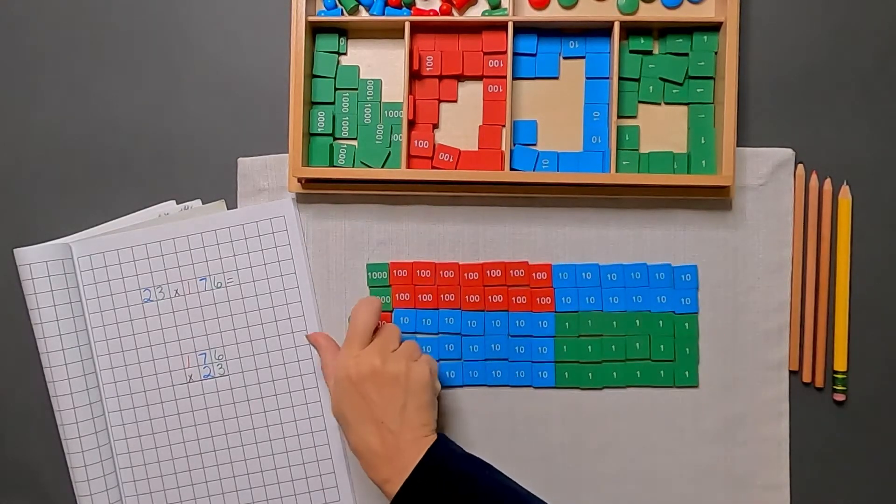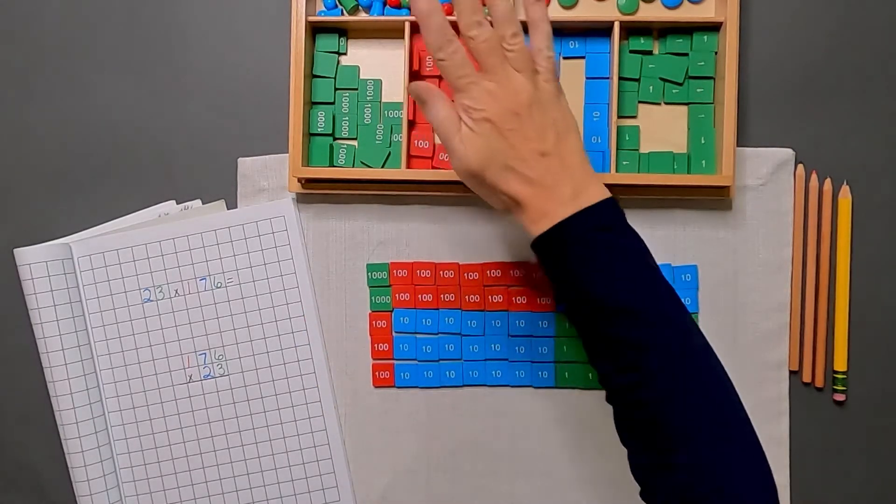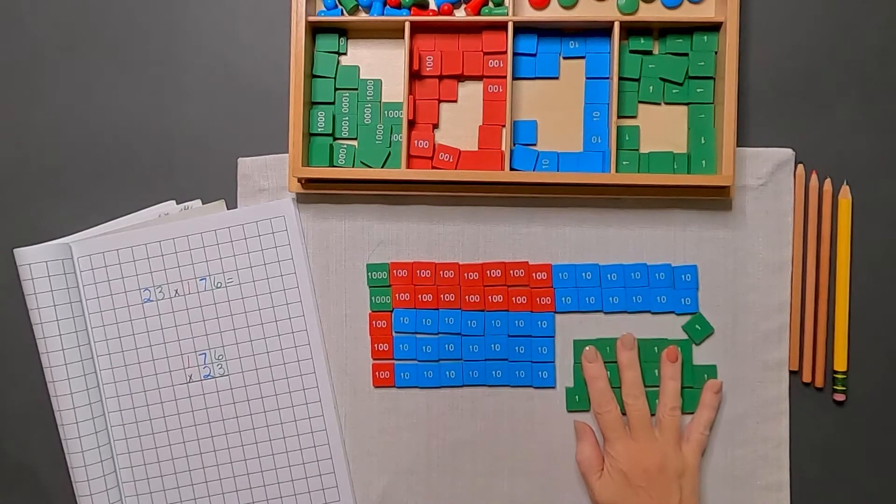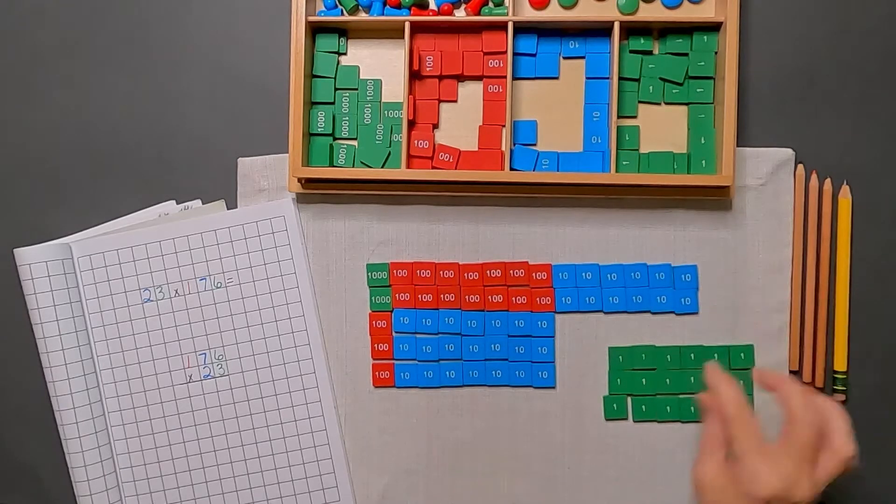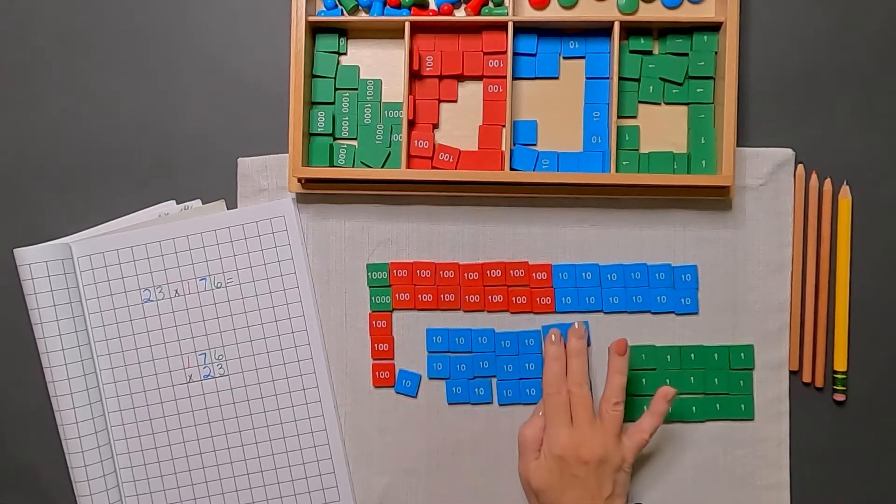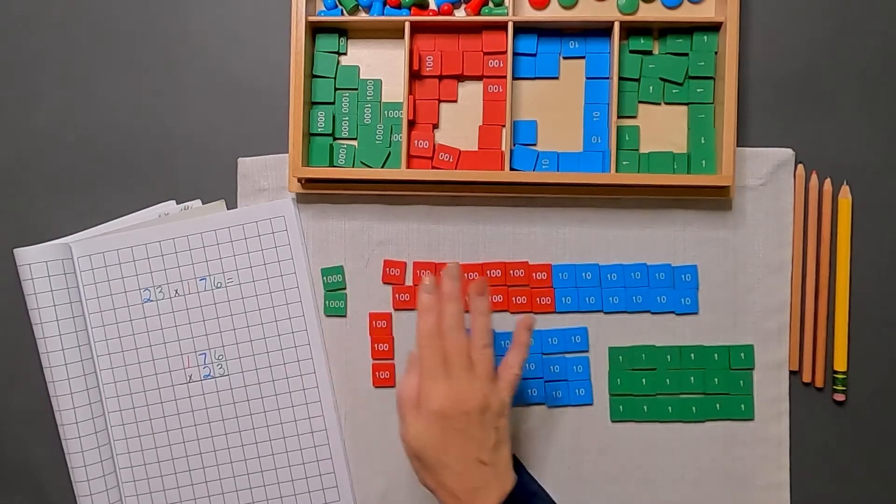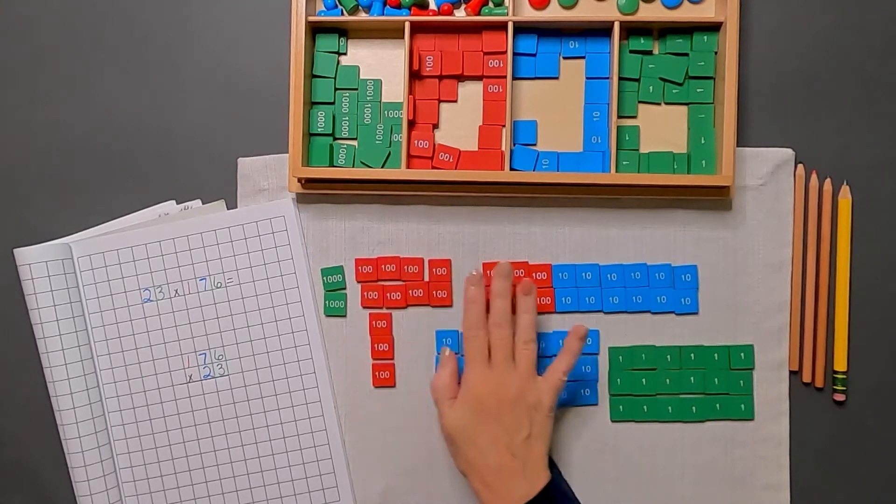Great. We have shared out all of the stamps that we need. I'm going to set my Skittles aside and we will add up our stamps to get the product now. Let's just go ahead and organize our units together, our tens together, and our hundreds together.